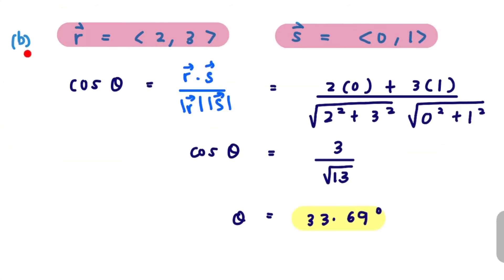Now let's see question b. You are given vector r which is 2i plus 3j and also vector s which is 0i plus 1j. So the question asks us to find the angle between vector r and s. So let's use the formula cos theta is just r dot s over magnitude r magnitude s.